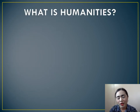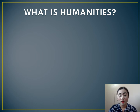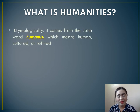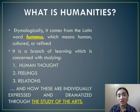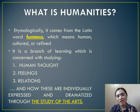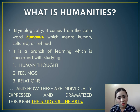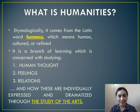Let us start with a basic definition of humanities. When we say humanities, it comes from the Latin word 'humanus,' which means human, cultured, or refined. Humanities is a branch of learning which is concerned with studying human thoughts, human feelings, and human relationships, and how these three can be individually expressed through different forms of arts.